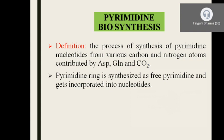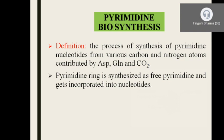Pyrimidine biosynthesis operates in almost all cells but mainly in the liver, similar to purine biosynthesis. Tissues which lack de novo synthesis — like WBC, RBC, and bone marrow — depend on the salvage pathway for pyrimidines.